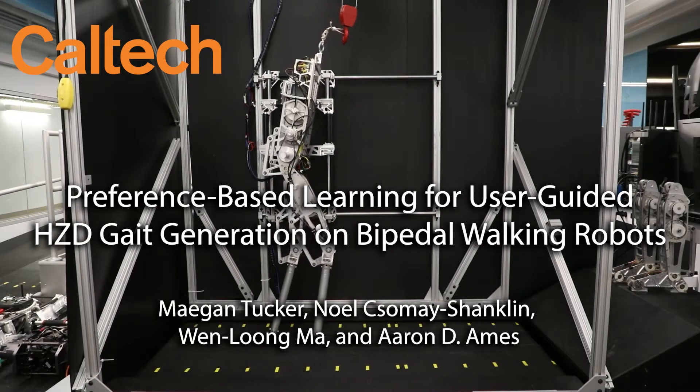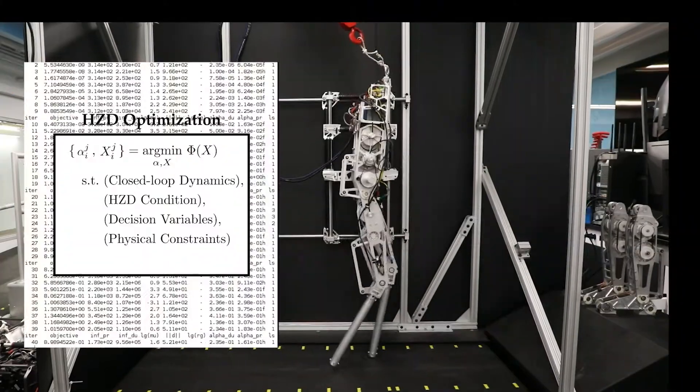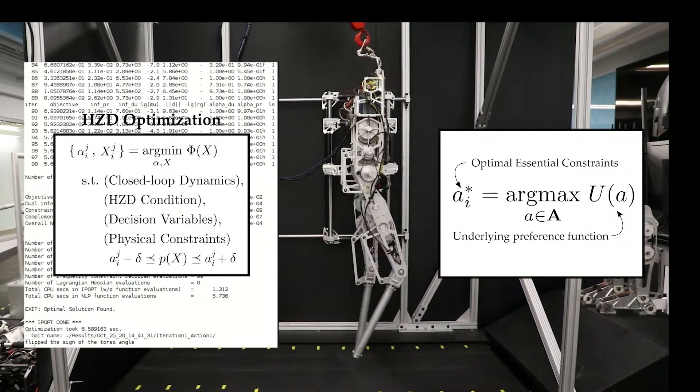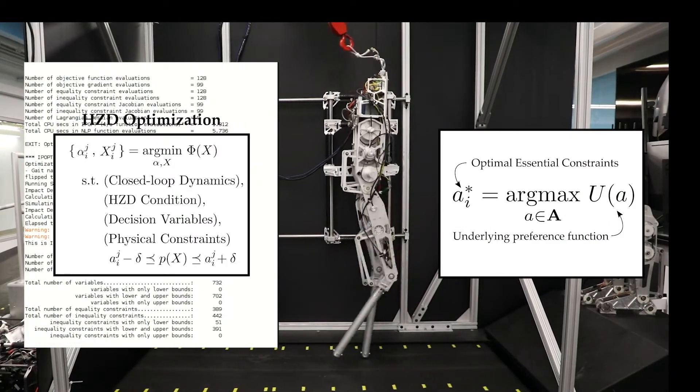This work presents preference-based learning for user-guided HCD gate generation on bipedal walking robots. We propose the use of preference-based learning towards identifying the essential constraints that optimize the underlying preference function of the human operator in as few iterations as possible.